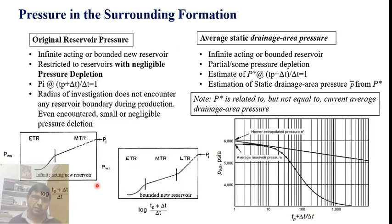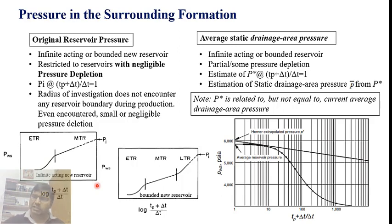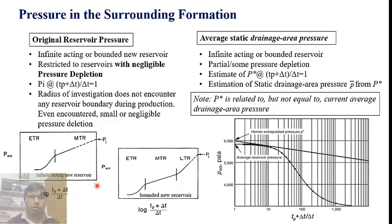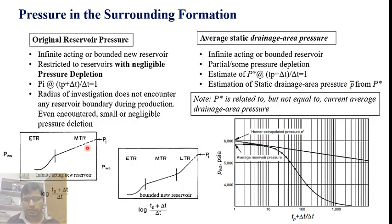When the well is shut in for a longer period of time, the radius of investigation travels deep into the reservoir. If no boundary is felt by the transient and negligible pressure drop exists far from the well, even the middle time region deviation is absent — meaning no boundary effect. Extrapolation of this line gives the initial reservoir pressure. However, we cannot shut in the well for infinite delta-t because it would be impractical or impossible to achieve.